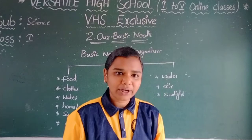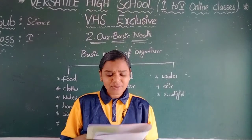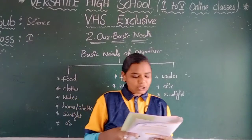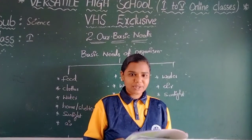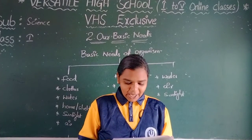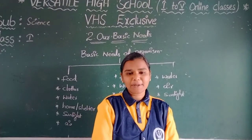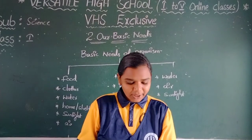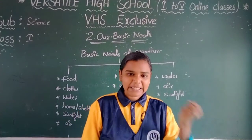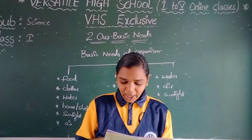First: food. Food makes us strong and healthy. It gives us energy to study and play. Some foods help us grow — milk, fish, eggs, and pulses are foods which help us to grow. Some foods give us energy: rice, sugar, butter, roti, and bread give us energy.